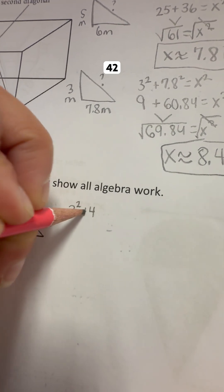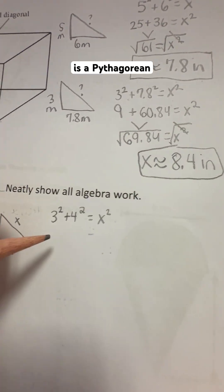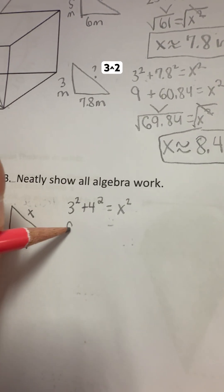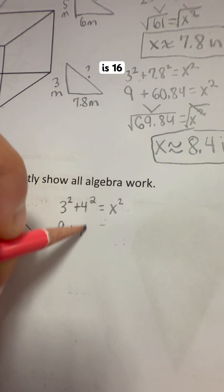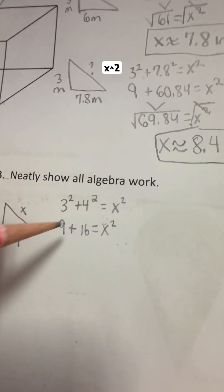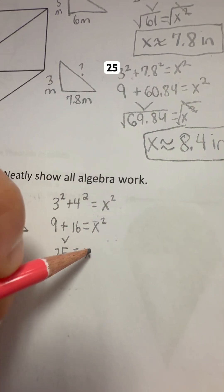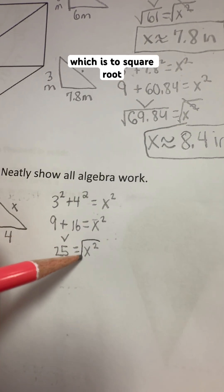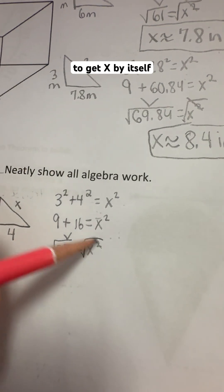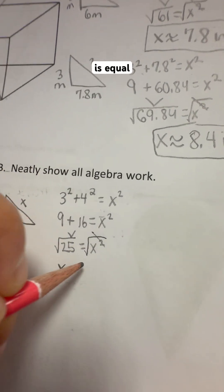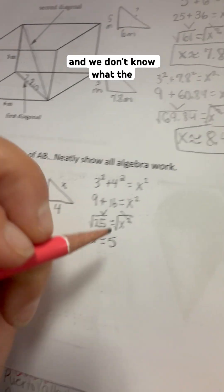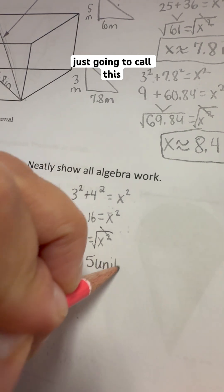3 squared plus 4 squared. This is a Pythagorean triple. 3 squared is 9, 4 squared is 16, it equals x squared. These two together add up to be 25. We want to get the inverse operation, which is the square root of both sides, to get x by itself. x is equal to 5. We don't know what the units are, so we're just going to call this 5 units. That is the first diagonal.